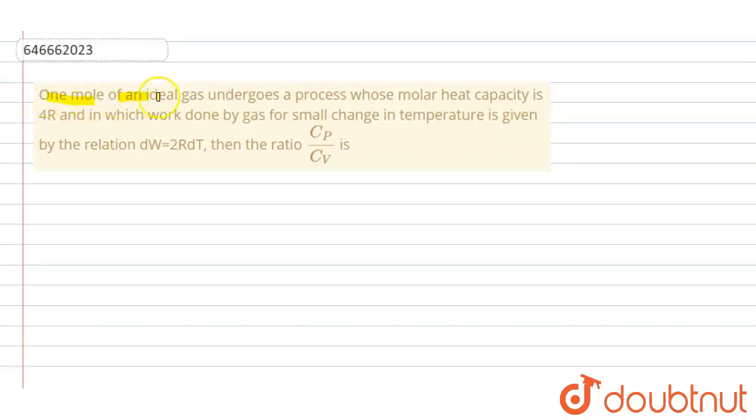One mole of an ideal gas undergoes a process whose molar heat capacity is 4R and in which work done by gas for a small change in temperature is given by relation dW equal to 2R dt. Then the ratio Cp upon Cv is.